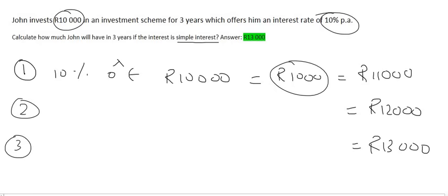So what we did is we took 10% of 10,000 Rand, we got 1,000 Rand, and then we just added 1,000 Rand for each year. So surely there's a formula that can do this for us, so we don't have to do it manually like this. Because what if they said 38 years? Well, that's going to take us a long time.